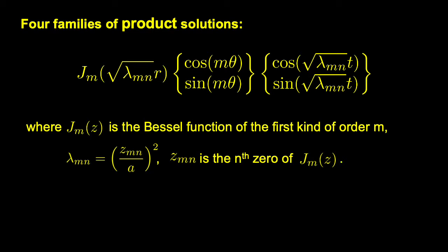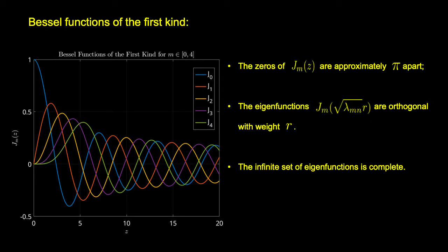They are called modes or fundamental modes. Here is a plot of the first few Bessel J functions. A few facts worth mentioning here: the zeros of J_m are approximately pi apart.